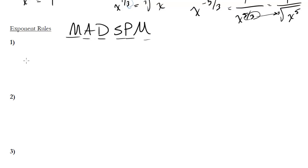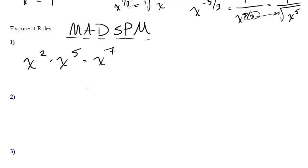So let's imagine I have x squared times x to the fifth. You just add the exponents — that gives x to the seventh. In general, the rule is x to the a times x to the b is just x to the a plus b.